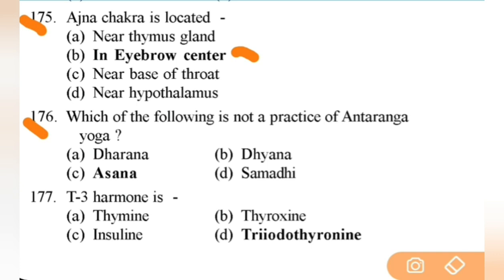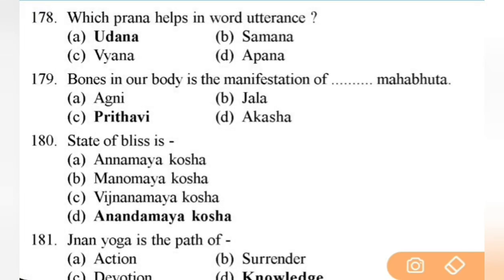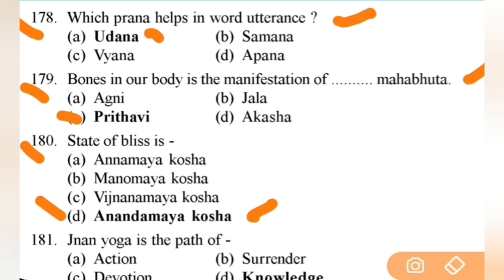Which of the following is not a practice of Antaranga yoga? Right answer is C — asana — important. Next: T3 hormone is secreted by the thyroid gland. Next: which Prana helps in vocalisation? Right answer is A — Udana Prana — very important. Next: bones in our body are the manifestation of which Mahabhuta? Right answer is C — Prithvi — earth — important.